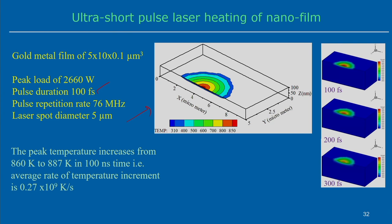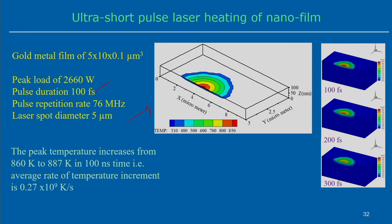Looking at the simulation on the right-hand side, at different times — 100, 200, and 300 femtoseconds — we see the progress of the heat affected zone specifically in the depth direction. Although the pulse duration is 100 femtoseconds, meaning pulse energy is supplied within that duration, at 200 or 300 femtoseconds there is no pulse energy being supplied. But we can see that even at 200 and 300 femtoseconds, the depth of penetration — the heat affected zone — is still increasing even though pulse energy application stopped after 100 femtoseconds.